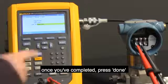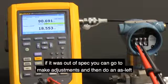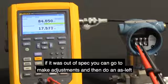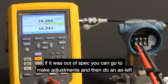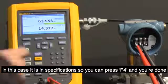Once you've completed, press done, and now the calibration has been documented. If it was out of spec, you could go to make adjustments and then do an as left. In this case, it is in specification, so you can press F4 and you're done.